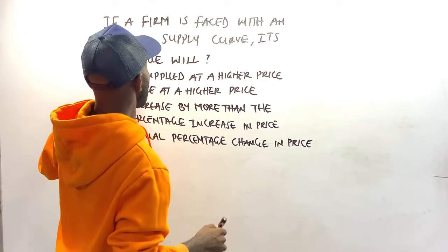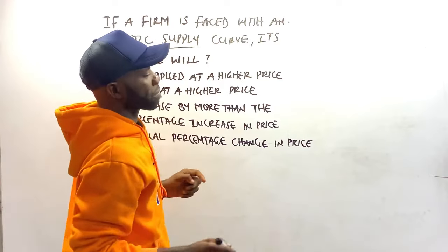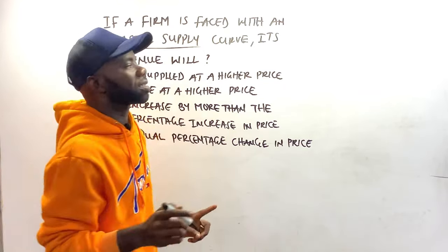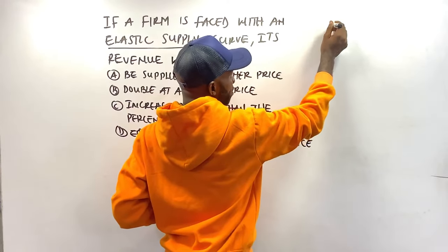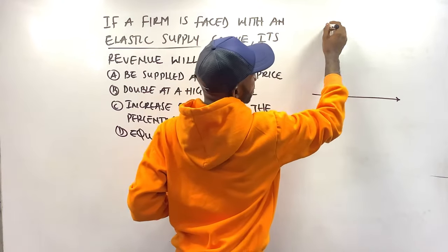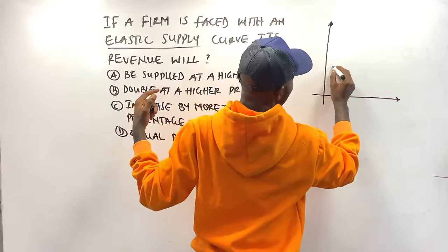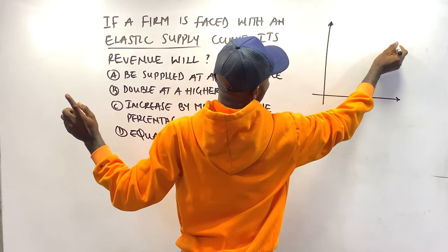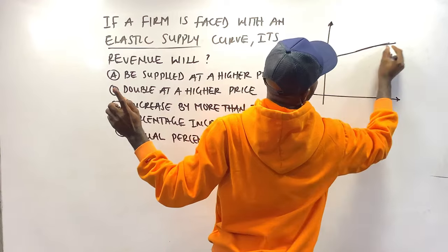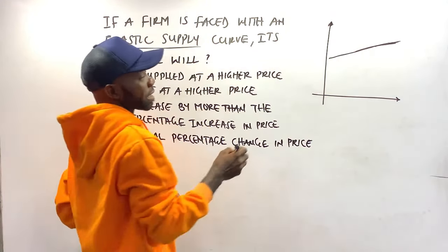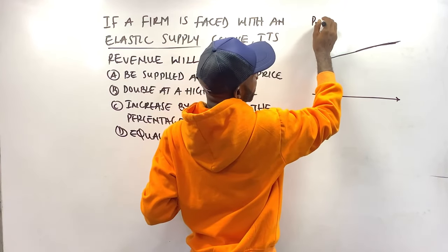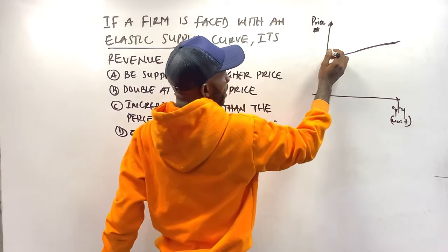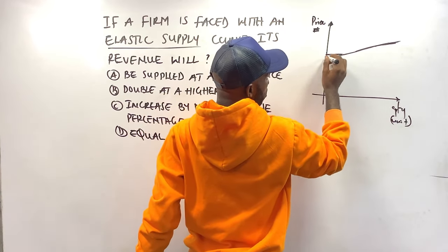This question can be analyzed perfectly with a diagram. For elastic supply — also called relatively elastic or fairly elastic — they share the same diagram. The elastic supply curve looks nearly horizontal, resembling perfectly elastic supply. On the diagram we have price on the vertical axis and quantity in units on the horizontal axis. Let's start with a first price.